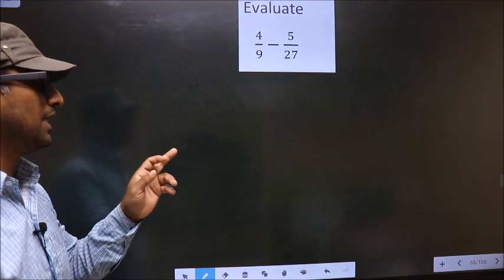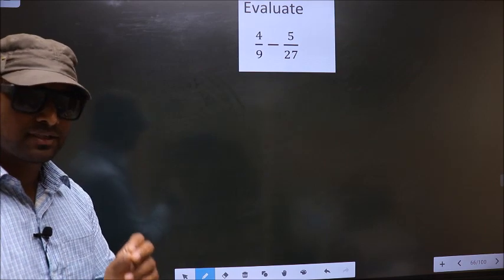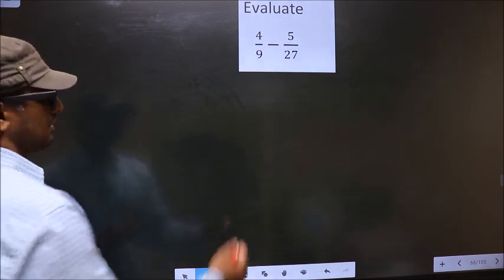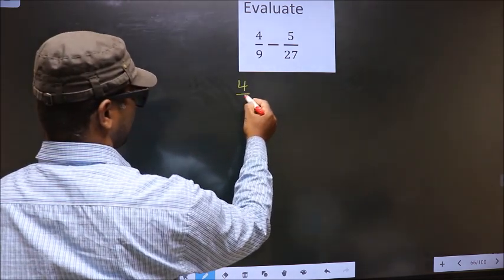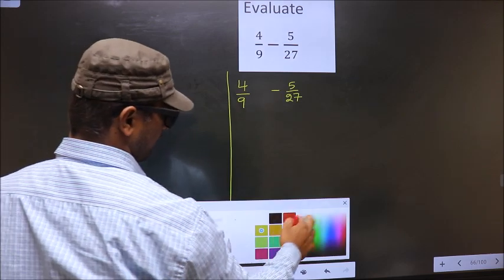Evaluate 4 by 9 minus 5 by 27. First given is 4 by 9 minus 5 by 27. Okay, next.